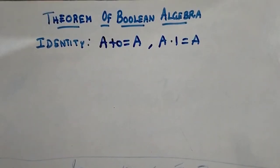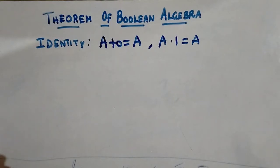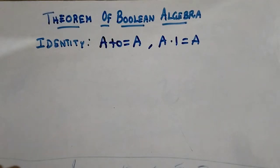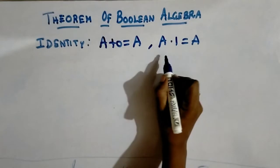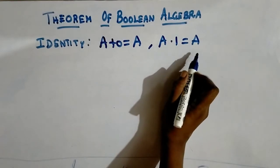Hello students. We are going to discuss about the theorems of Boolean algebra. Till the previous video, we have studied about Boolean expressions and logic gates. These theorems help you to minimize Boolean expressions. Let's discuss about the theorems here. The first theorem is identity: a plus 0 equals a, and a dot 1 equals a.